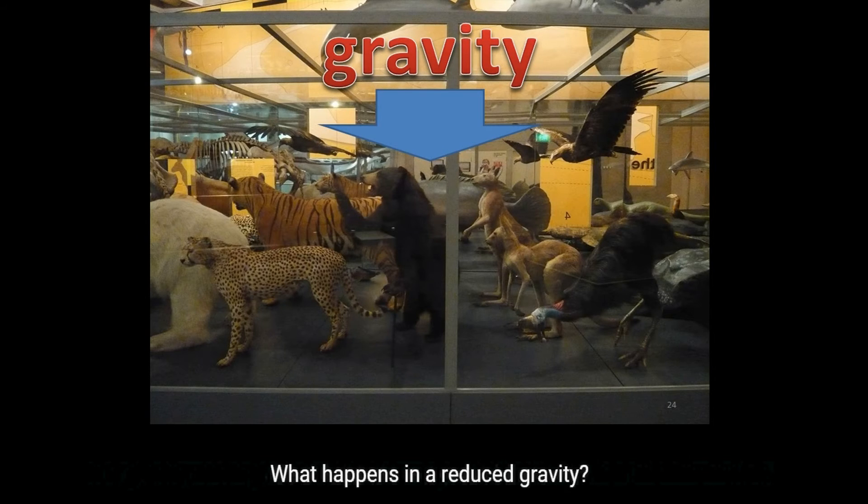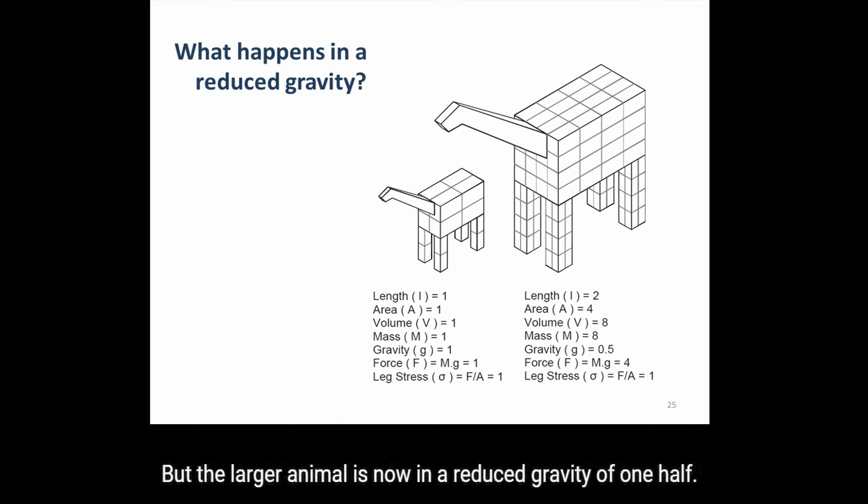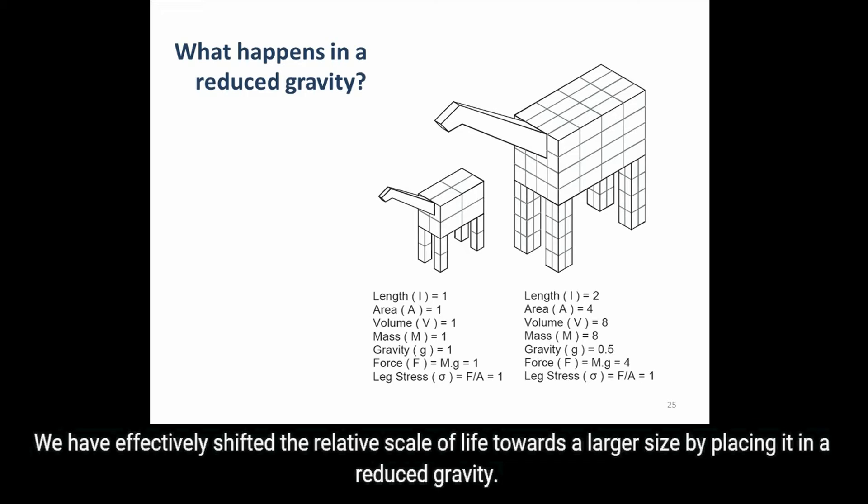But what happens in a reduced gravity? Here are our standard animals once again. The two animals are exactly the same shape, and the larger one is twice the linear scale of the smaller animal. But the larger animal is now in a reduced gravity of one half. So the larger animal would only be four times as heavy as the smaller one. Both animals have the same leg stress because of this difference in gravity. We have effectively shifted the relative scale of life towards a larger size by placing it in a reduced gravity.